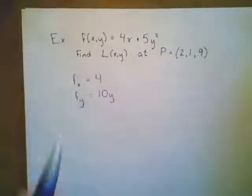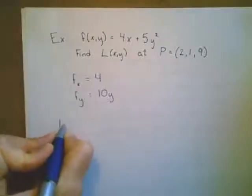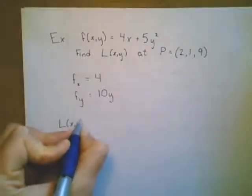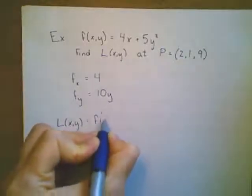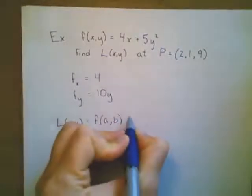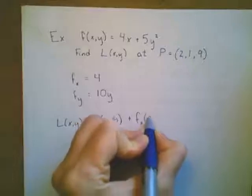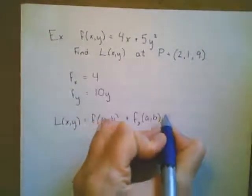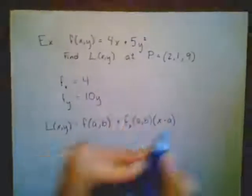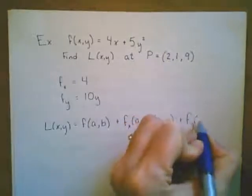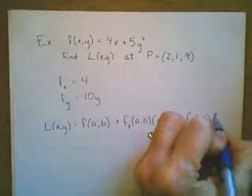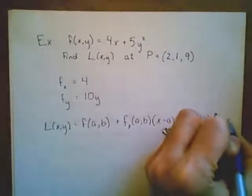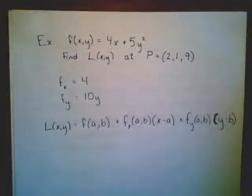And so if I evaluate my partial derivative with respect to x, maybe we'll start filling in our formula. So our local linearization we know is going to be equal to f of a, b, plus f sub x at a, b, times x minus a, plus f sub y of a, b, times y minus b.